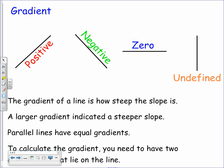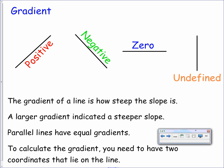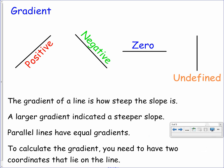The gradient of the line itself tells us how steep the slope is. The larger the gradient indicates a steeper slope. Think about parallel lines, lines that run in the same direction. Those two lines have equal gradients. They have the same slope at every single point on their length. To calculate the gradient of the line, you need to have two coordinates that lie on it.